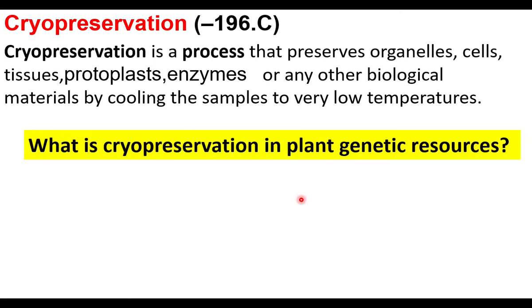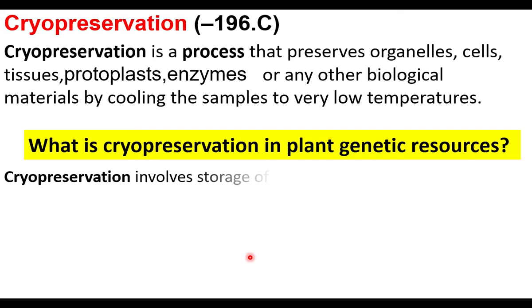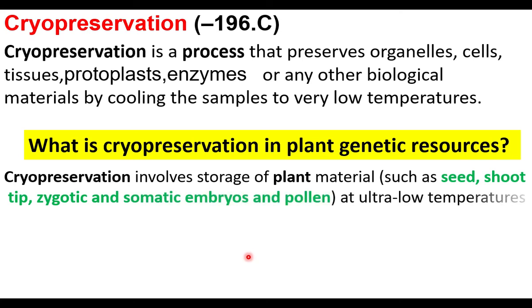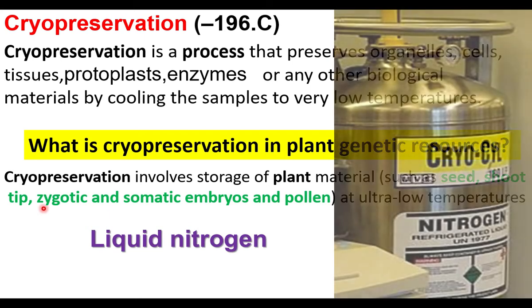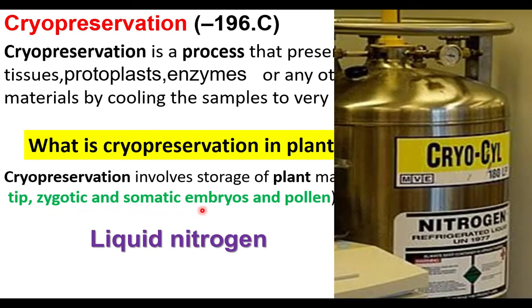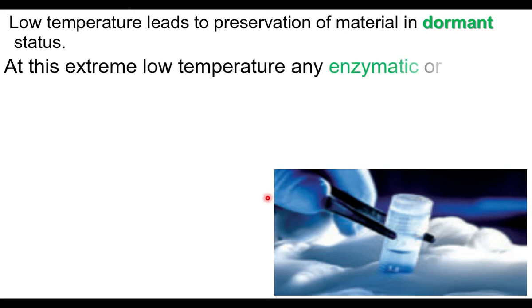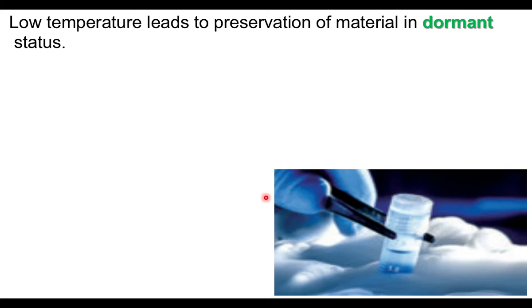What is cryopreservation in plant genetic resources? Cryopreservation involves storage of plant material such as seeds, shoot tips, zygotes, somatic embryos, and pollen, which are stored in liquid nitrogen under very low temperature.